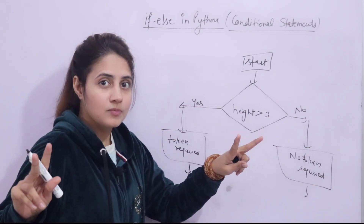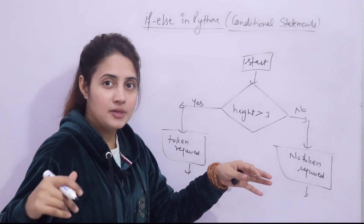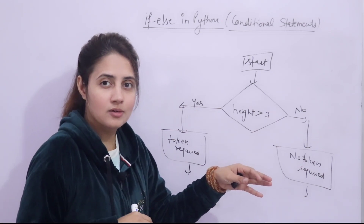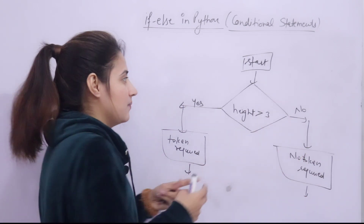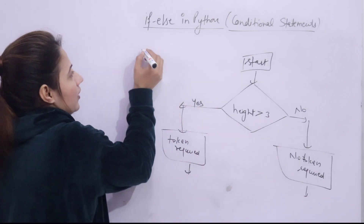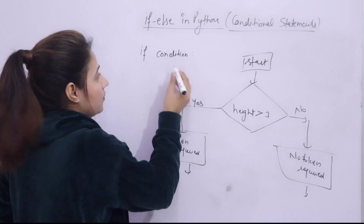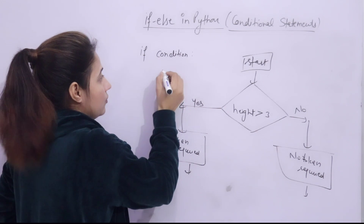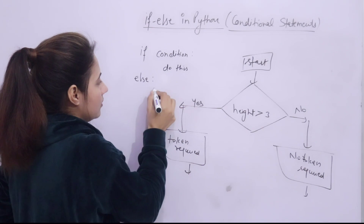If there is only one choice — for example, if apples are available buy apples, otherwise come back empty-handed — we use a simple if with no else. But when there are two choices, we use if and else. The general syntax: write 'if', then some condition, then a colon, then the block of statements to execute. Then 'else', colon, and the alternative block.